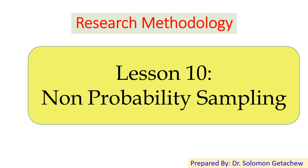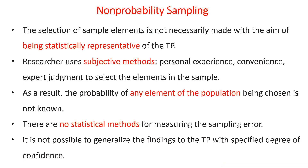Hello everybody and welcome to lesson 10: non-probability sampling. In previous lesson 9 we already discussed probability sampling. In non-probability sampling, as the name implies, the selection of sample elements is not necessarily made with the aim of being statistically representative of the target population, because there is no equal chance of being selected.